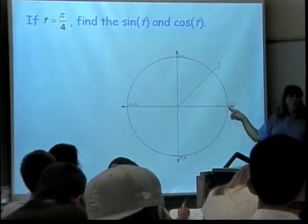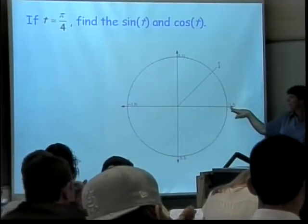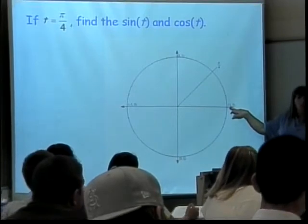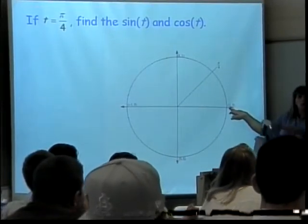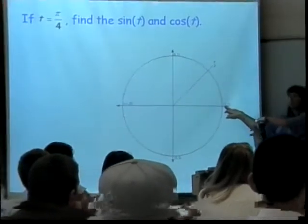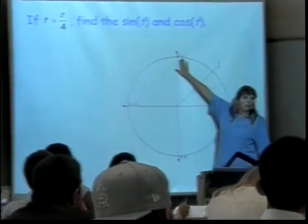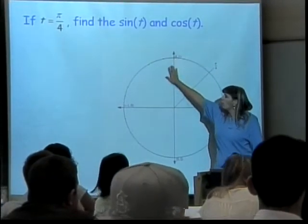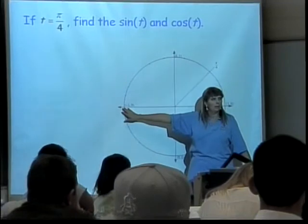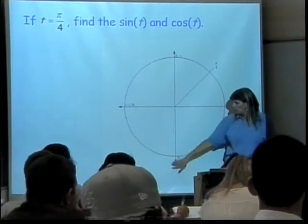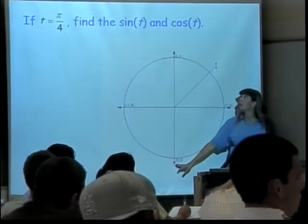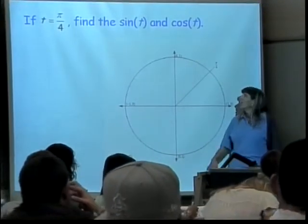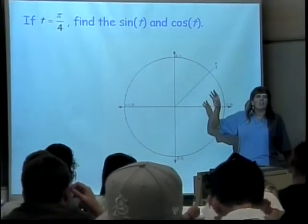There are some easy ones. For instance, what's the sine of the angle zero? Sine is the Y coordinate, so the sine of zero is zero. What's the cosine of the angle pi over two? Zero. What's the cosine of the angle pi? Negative one. And the sine of the angle three pi over two? Negative one.